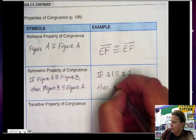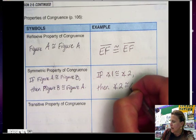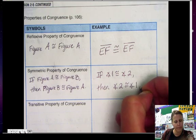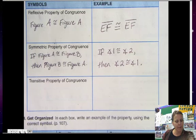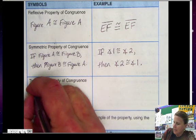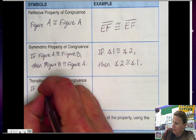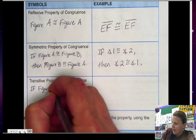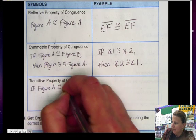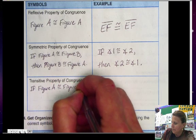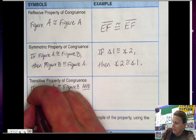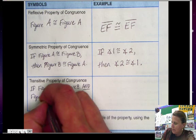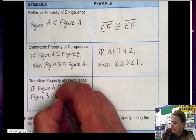And lastly, the transitive property of congruence. So this is if some figure a is congruent to some figure b, and some figure b is congruent to figure c.